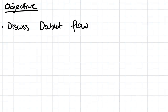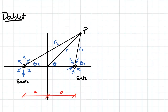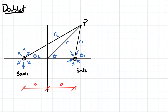The objective for this video is to discuss doublet flow. A doublet is a combination of a source and a sink. The source and the sink are separated by a distance of 2a, and what we're considering is some point where we want to work out what the velocity potential and the streamline is at that point.